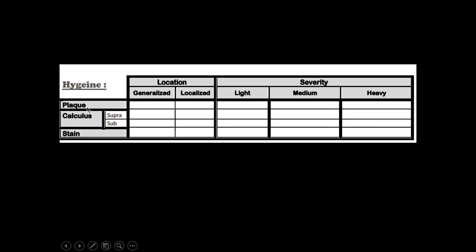The next issue is hygiene — we record the amount of plaque, calculus, and stain. Plaque is a soft accumulation of debris and bacteria that can be removed by ordinary brushing. Calculus is the calcification of plaque biofilm and cannot be removed by brushing. You will learn about plaque biofilm and calculus formation in detail in your literature. Calculus may be supragingival — seen with the naked eye — or subgingival — examined by instrumentation. Stain may be intrinsic or extrinsic; intrinsic stains need internal bleaching, while extrinsic stains can be removed by bleaching or polishing, such as those from smoking, tea, or coffee.